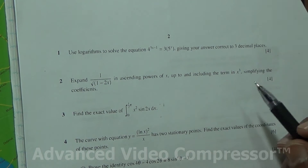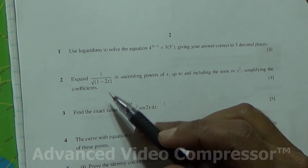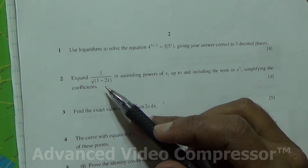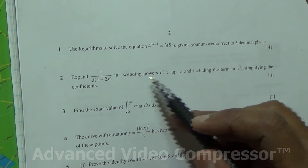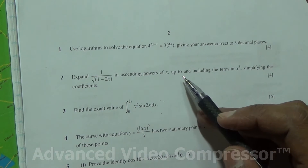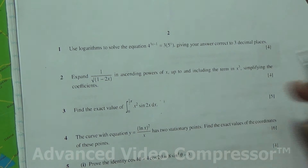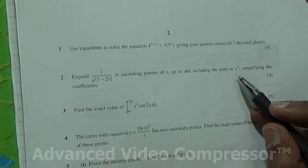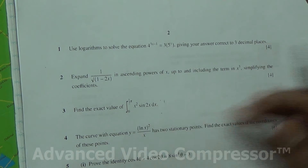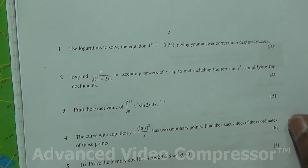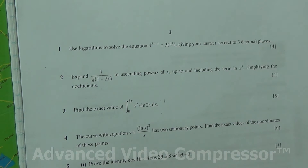Hi, question number 2. Expand 1 over root of 1 minus 2x in ascending powers of x, up to and including the term in x cubed, simplifying the coefficients.